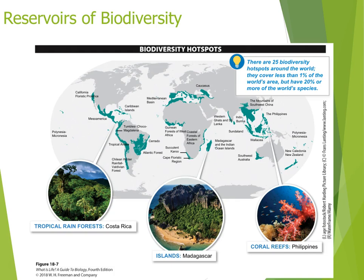Around the world there are 25 biodiversity hotspots. These hotspots cover less than one percent of the world's area including oceans, but contain 20 percent or more of the world's species. Many are rainforests at the equator, many are on islands. There are the rainforests of South America and Central America, surprising biodiversity around the Mediterranean Sea, and hotspots in Indo-Burma and the mountains of southwestern China — places that are really important if we're trying to maintain biodiversity.